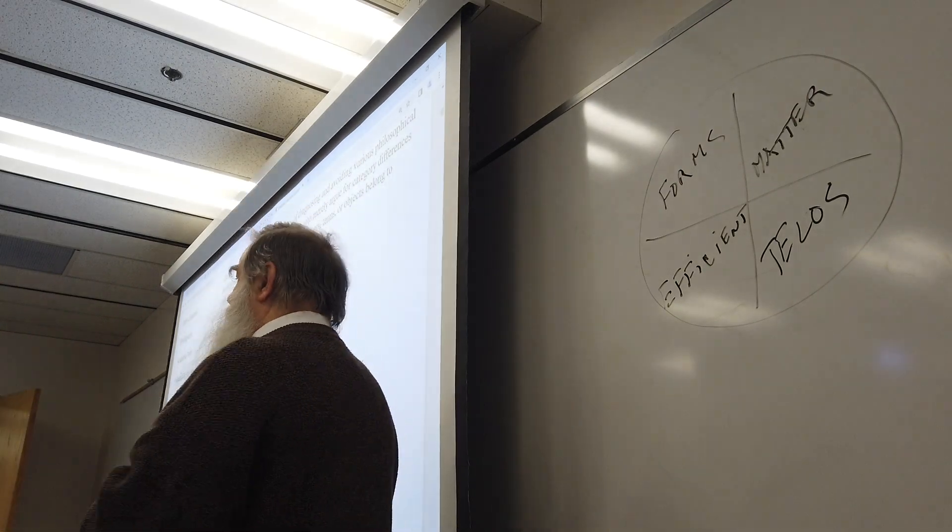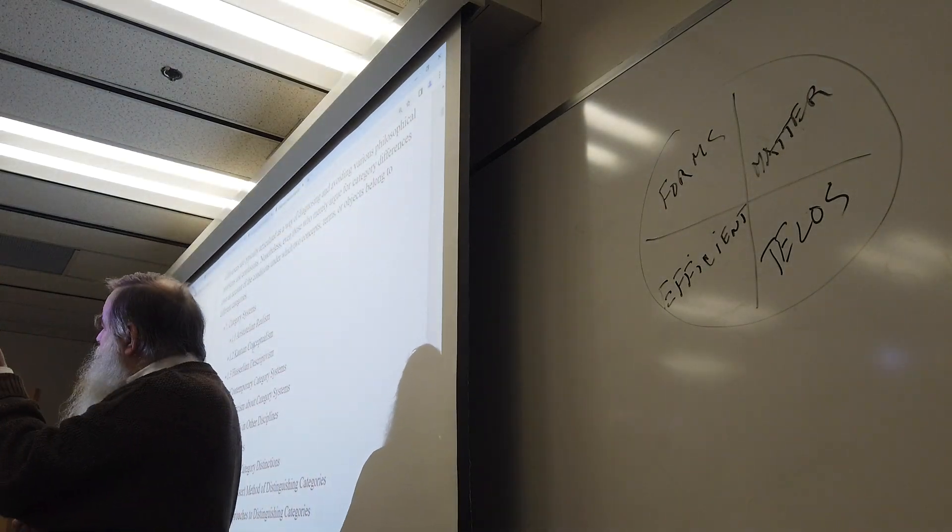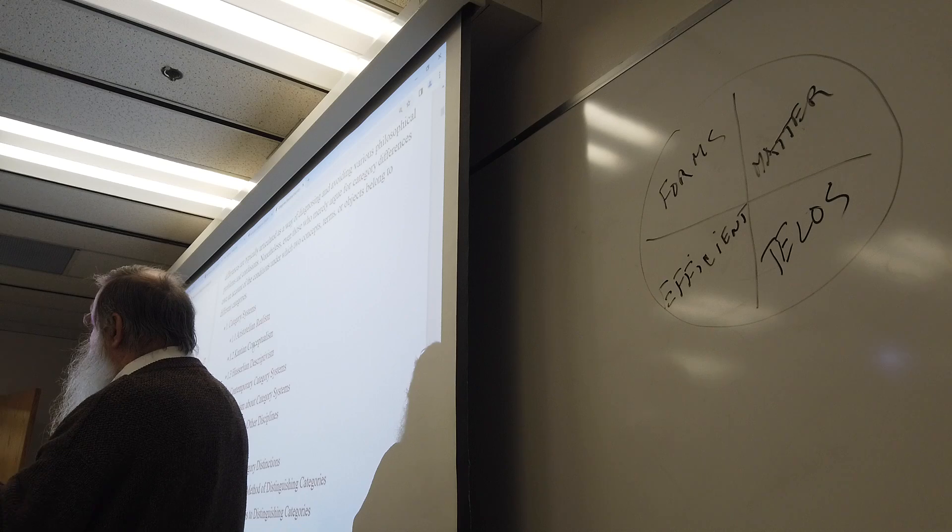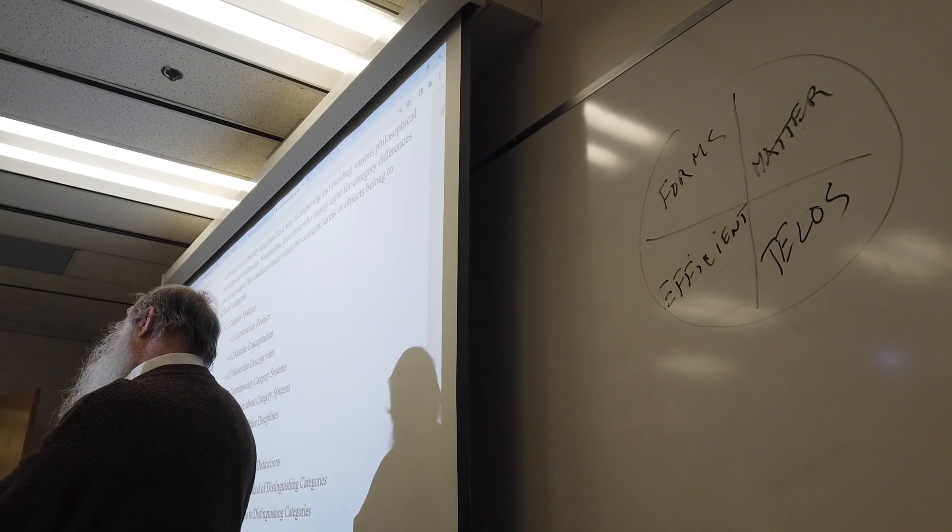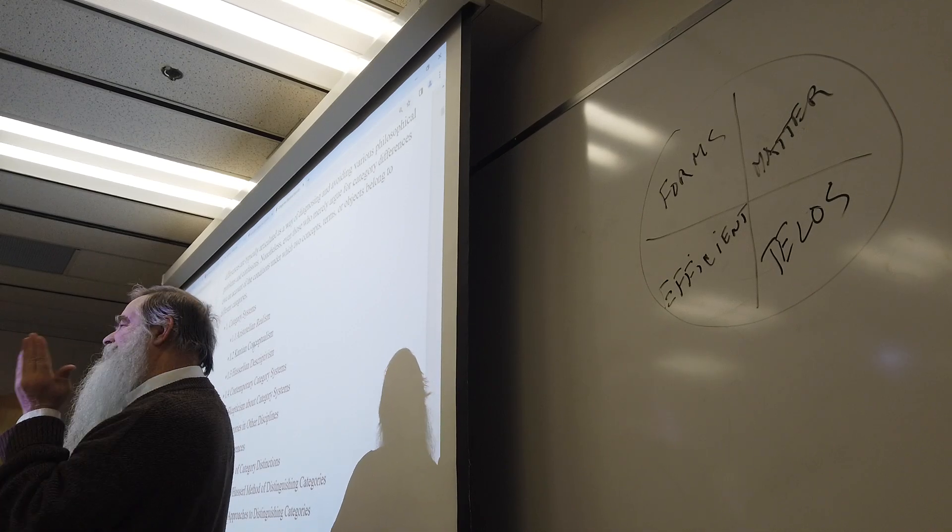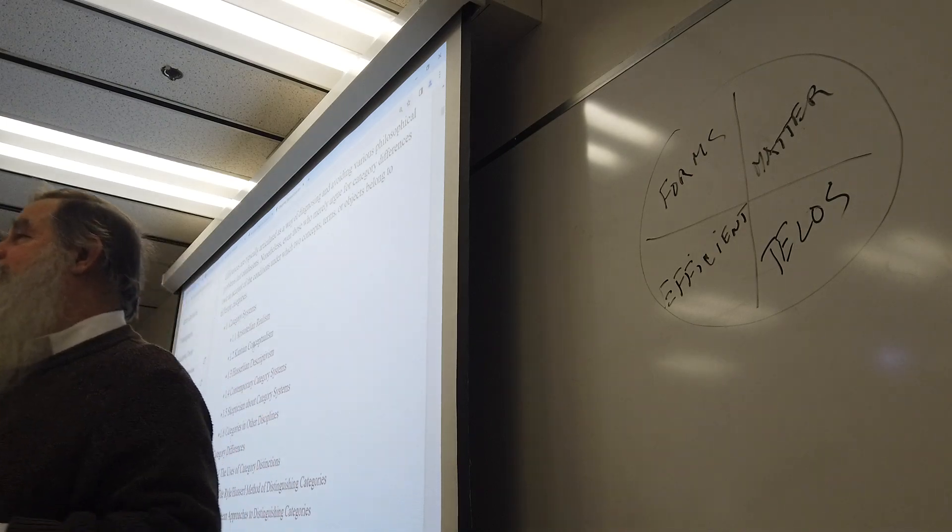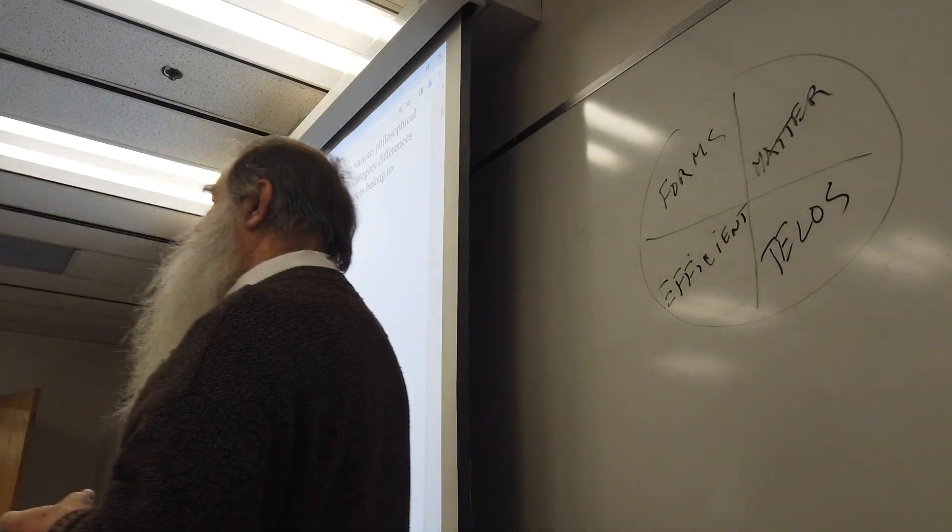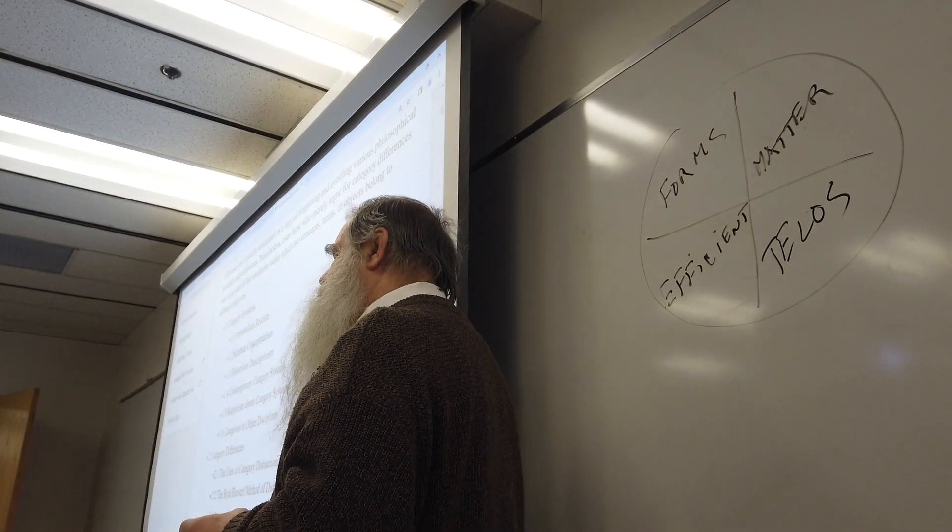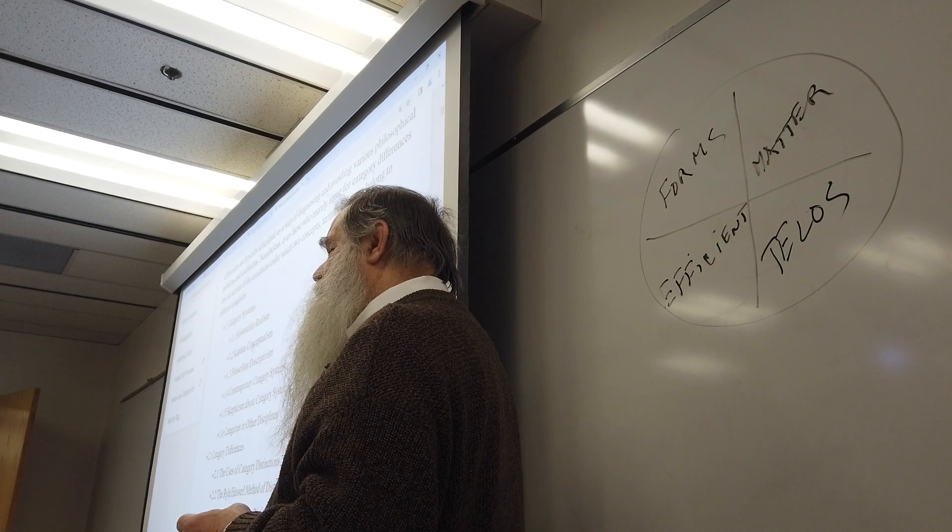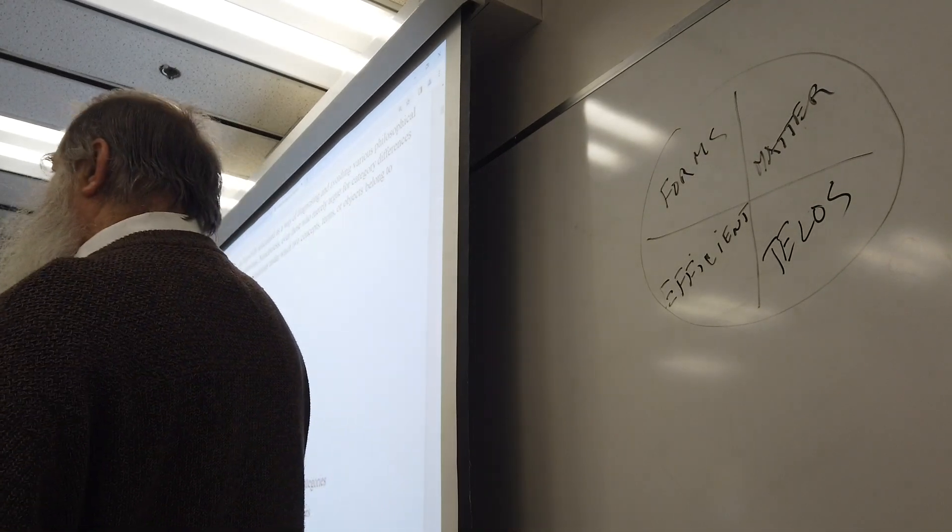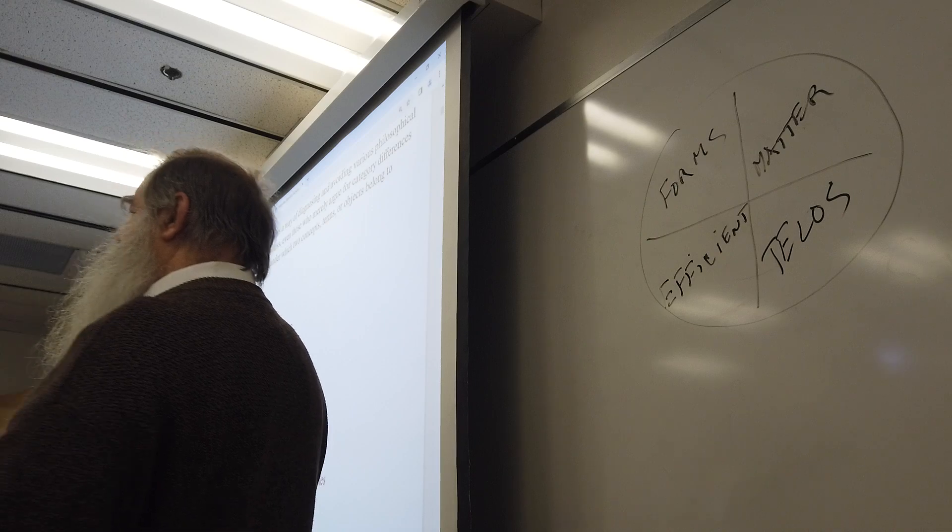Gravity. Aristotle thought things naturally fell to the place where they wanted to be. And in fact, one specific example was that the heaviest thing falls faster than lighter things.